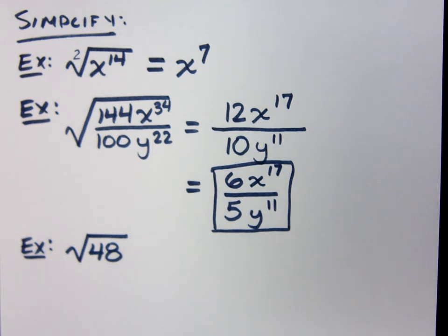Is 48 a perfect square? No. So I need to be able to break this down. You can either find the largest perfect square that goes into that, but if you don't see it, you break it down with factor trees. How can I break this guy down?